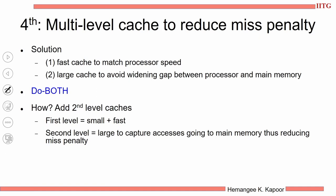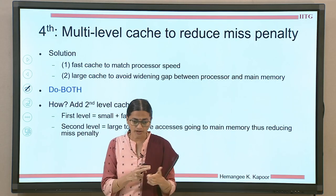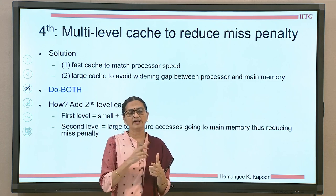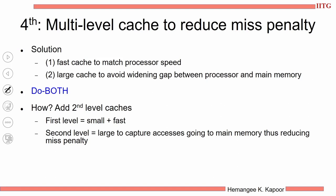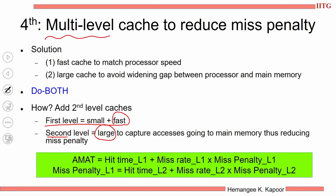We want to do both — a fast cache and a large cache — even though they are conflicting. Is it possible? We can achieve both if we associate one property to a different level of cache. I will use two levels of cache: the first level can be fast and the second level can be large. So the first level is small and fast, and the second level is large. This larger cache will help in reducing the miss penalty. This concept of having multiple levels is called the multiple level cache optimization, which helps in reducing the miss penalty.